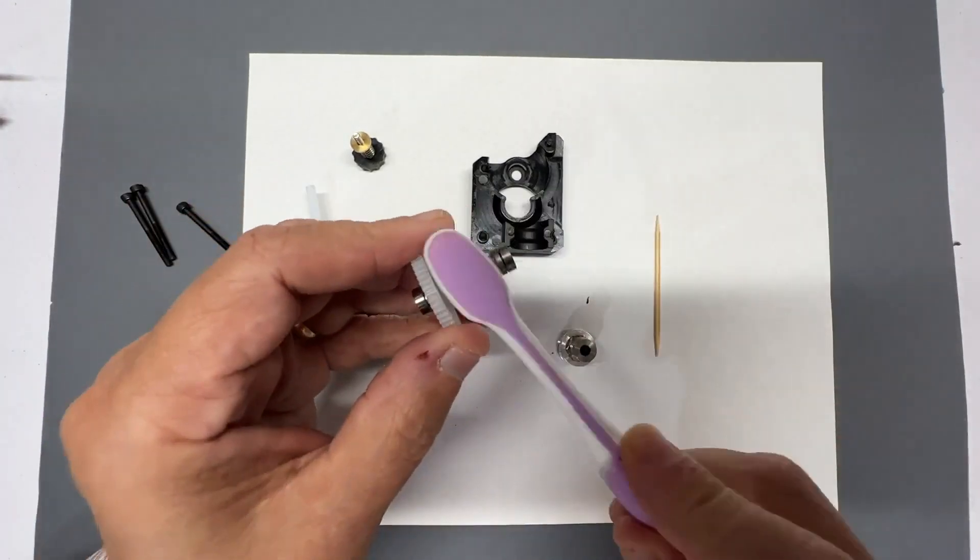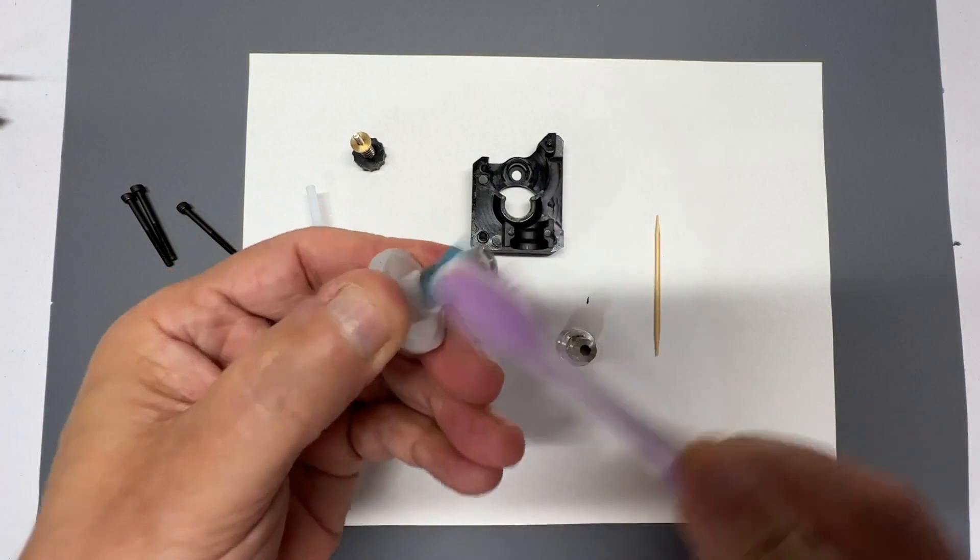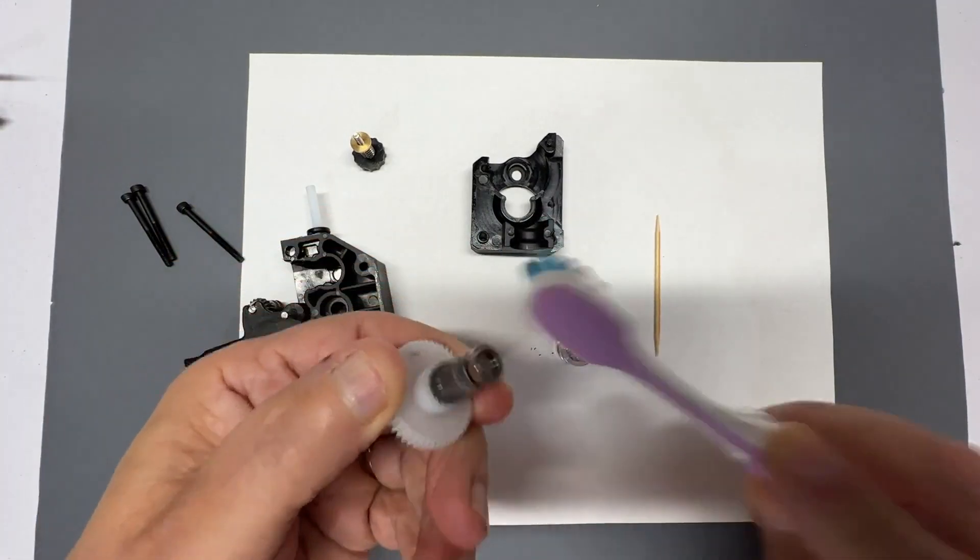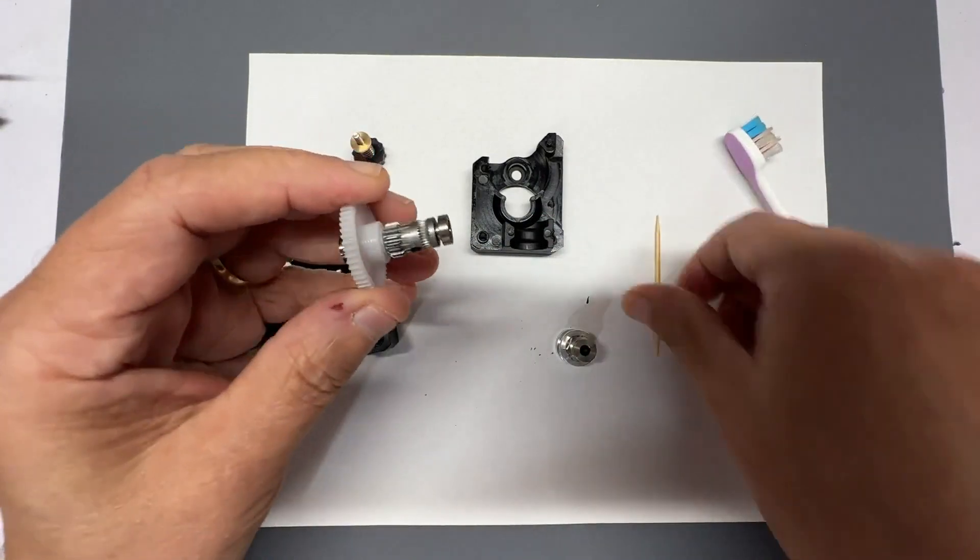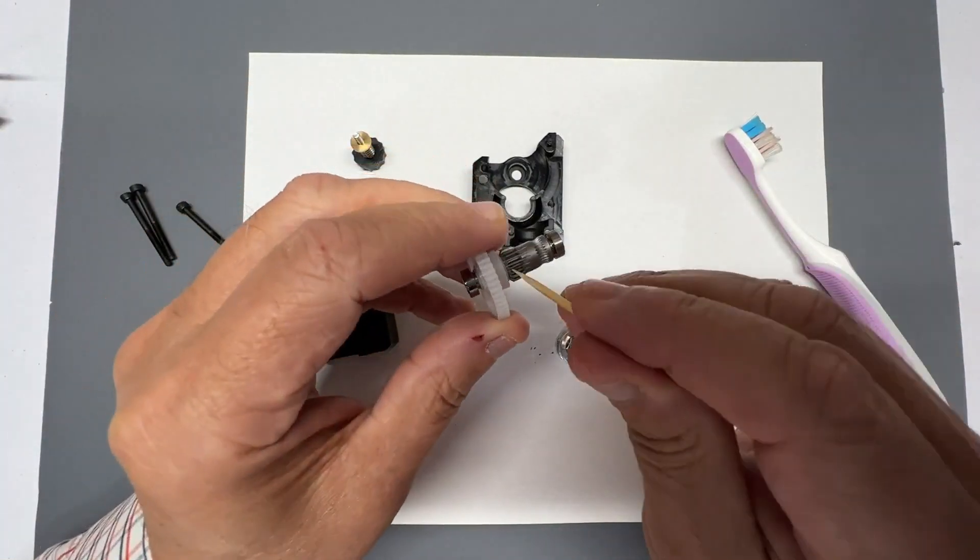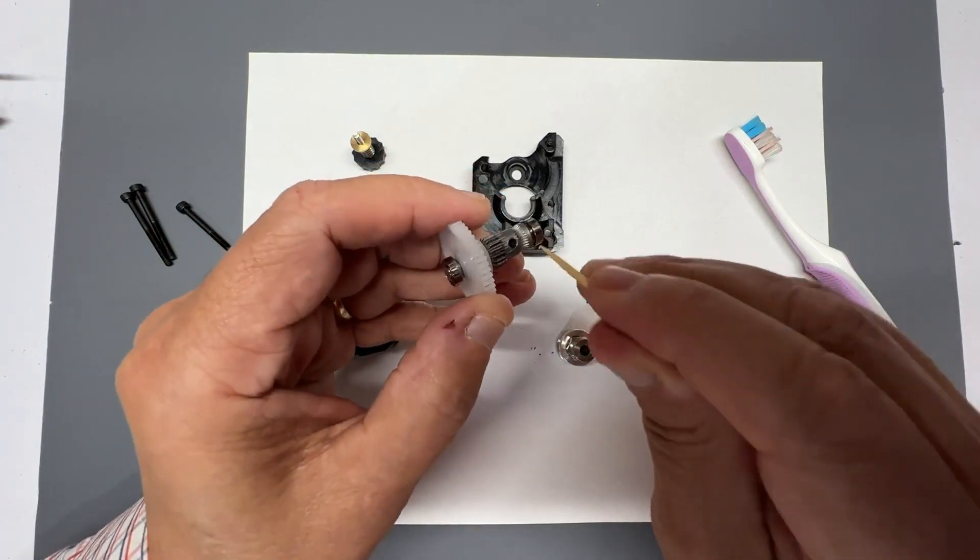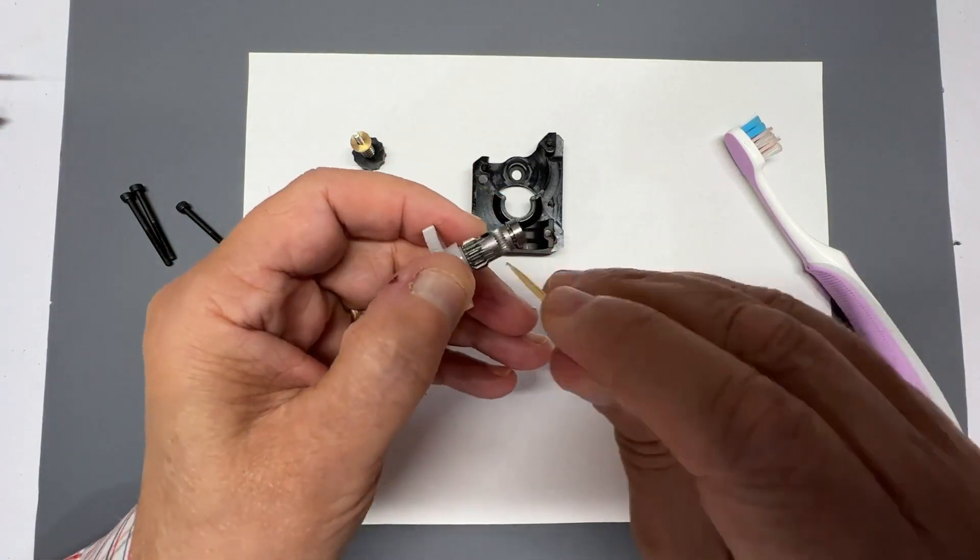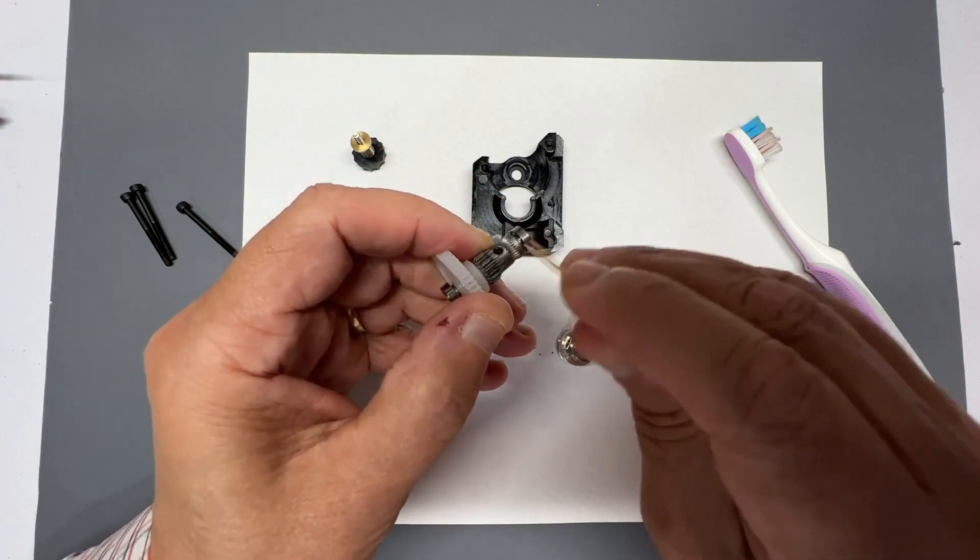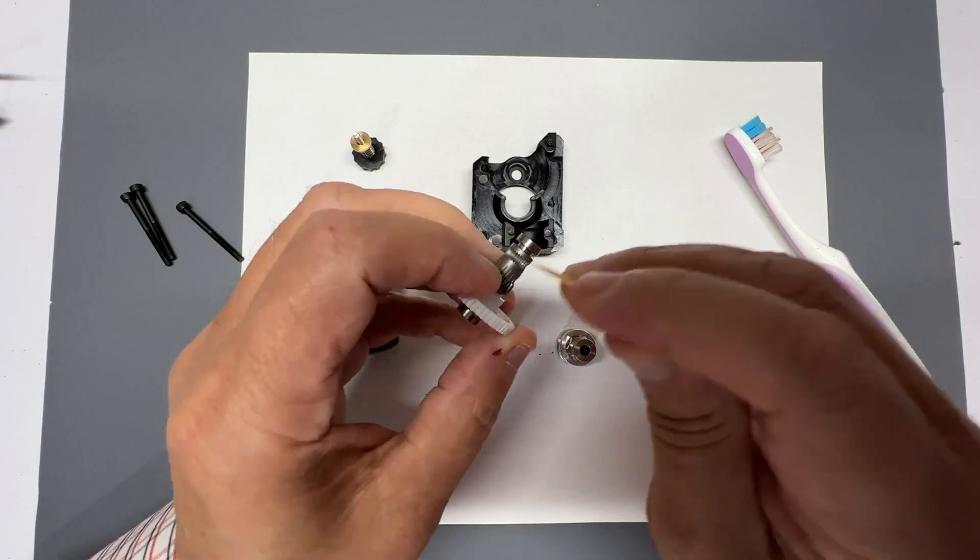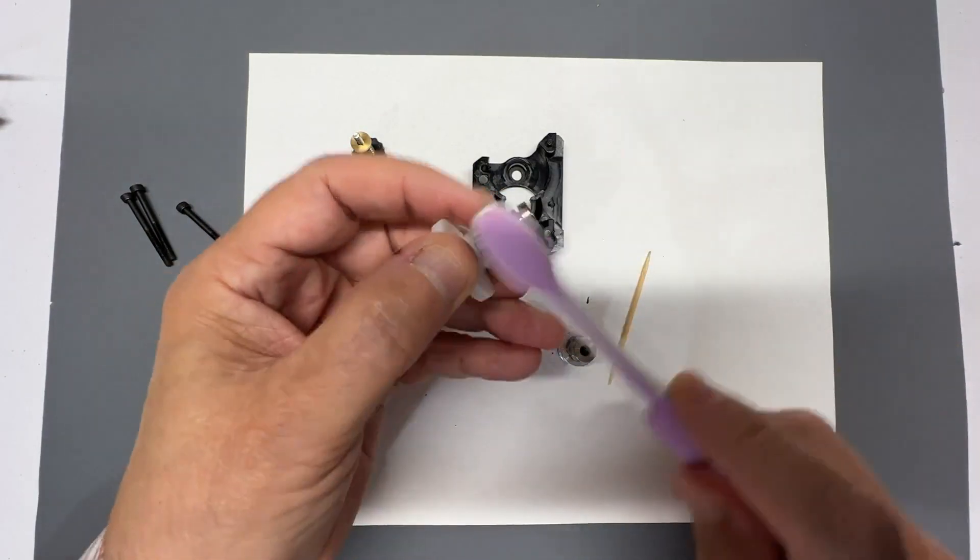Clean it off with a toothbrush or something. I always use that. And I always make sure to look closely at it to make sure there's nothing in the gears. And if there is, just remove it with a toothpick. Any leftover PLA or filament of any sort. Just do that. And then just brush it away again.